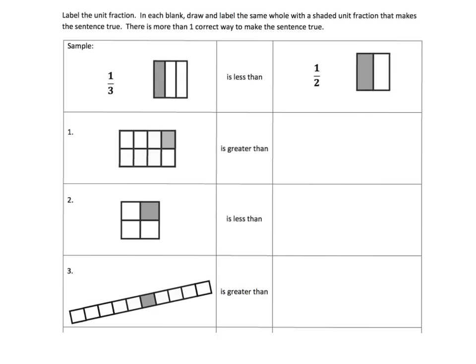So here, we're going to begin by doing all whole, where the wholes are all the same. So label the unit fraction, and that's this side. And then in each blank, draw and label the same whole. That's the thing. That's the key. The same whole with a shaded unit fraction that makes the sentence true. And parents and teachers, the cool thing about this lesson is that there is more than one correct way. So this isn't going to be a video that you could use as the answer key.